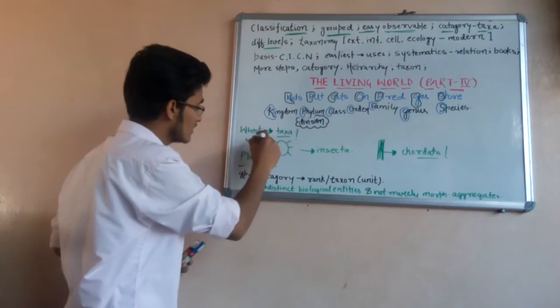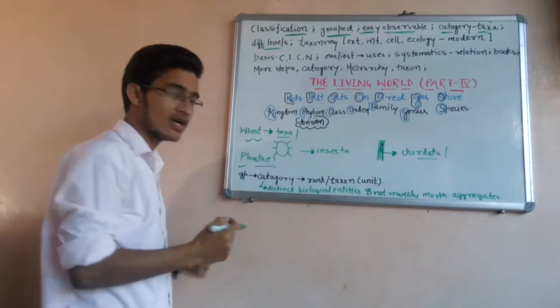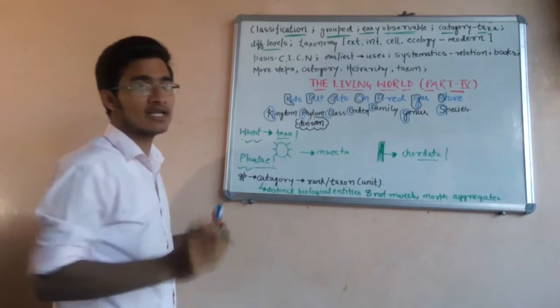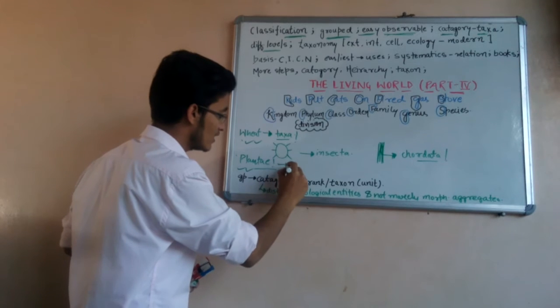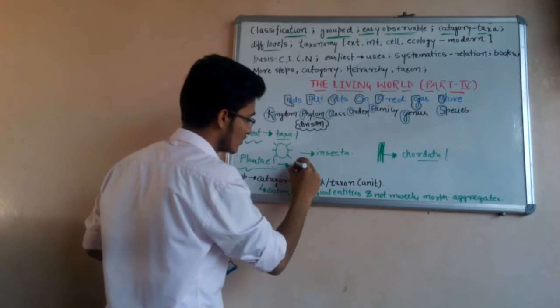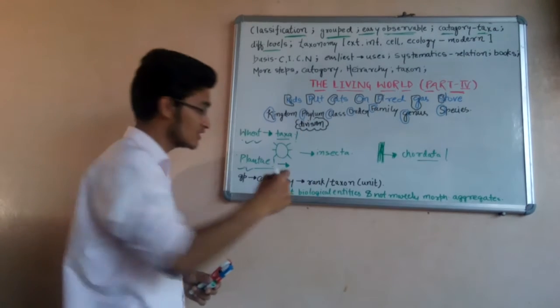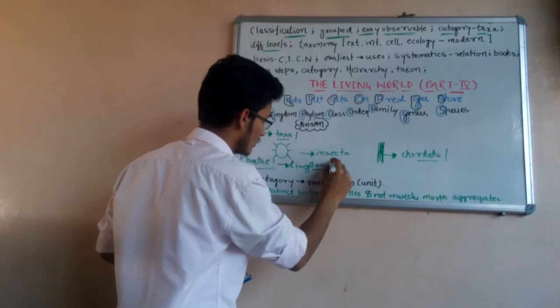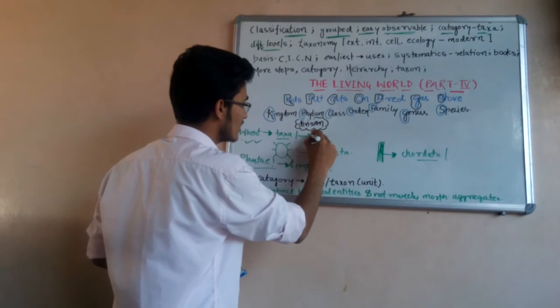Wheat and Plantae are related to each other. Wheat is a part of kingdom Plantae, but these are taxa at different levels. One is representing a phylum or a bigger division, that is kingdom, and one is simply representing the species.